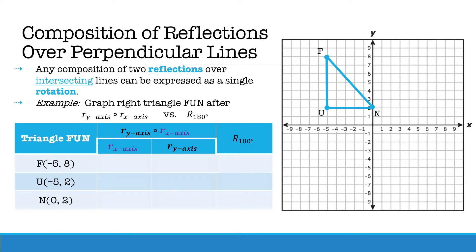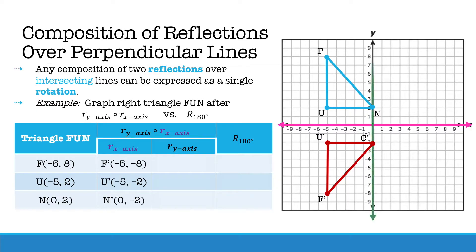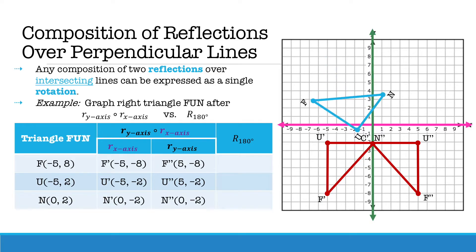Any composition of two reflections over intersecting, or in this specific case perpendicular, lines can be expressed as a single rotation. Here we have a reflection over the y-axis follows a reflection over the x-axis. If we reflect over the x-axis and then reflect over the y-axis, this is actually the same thing as rotating our image 180 degrees.